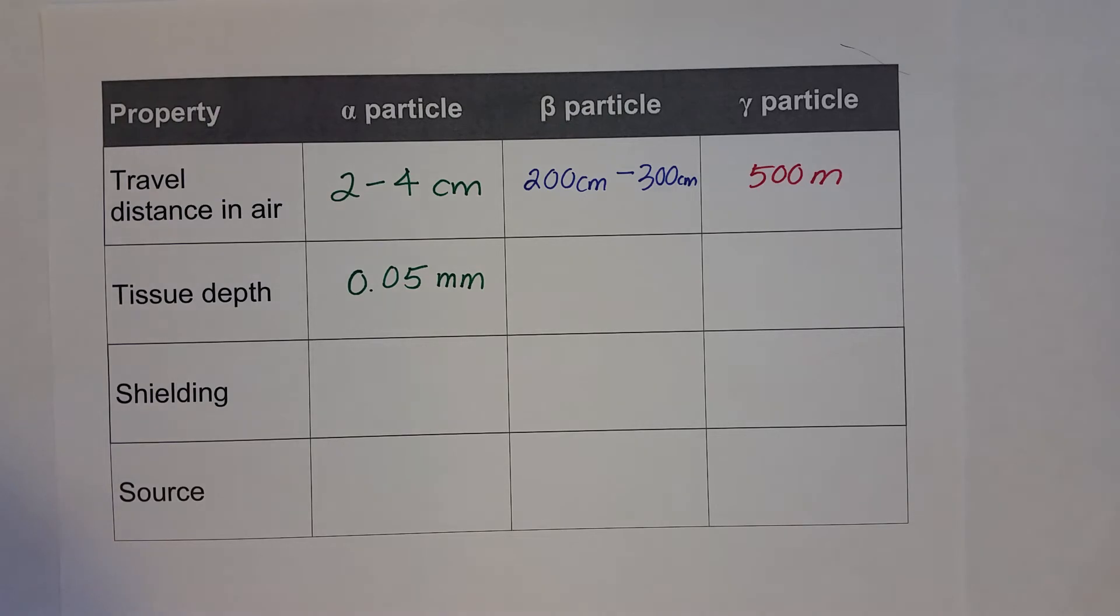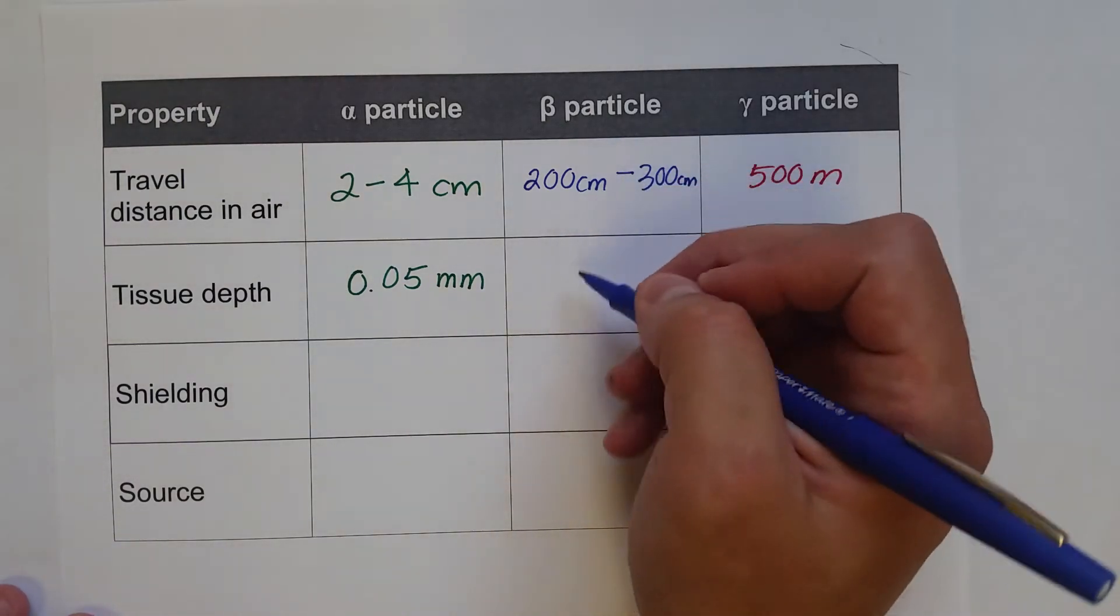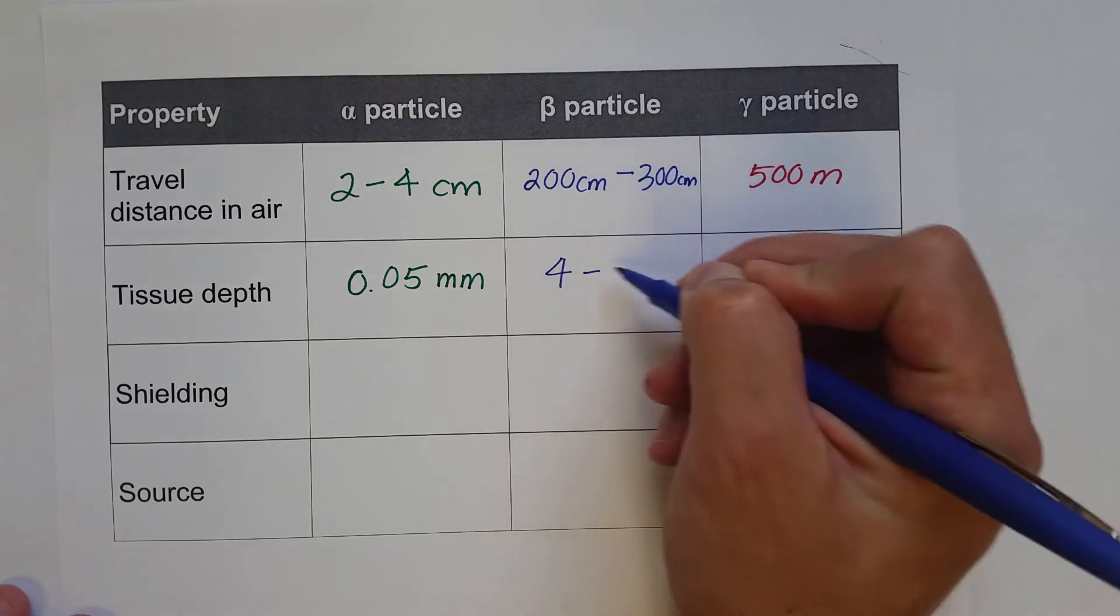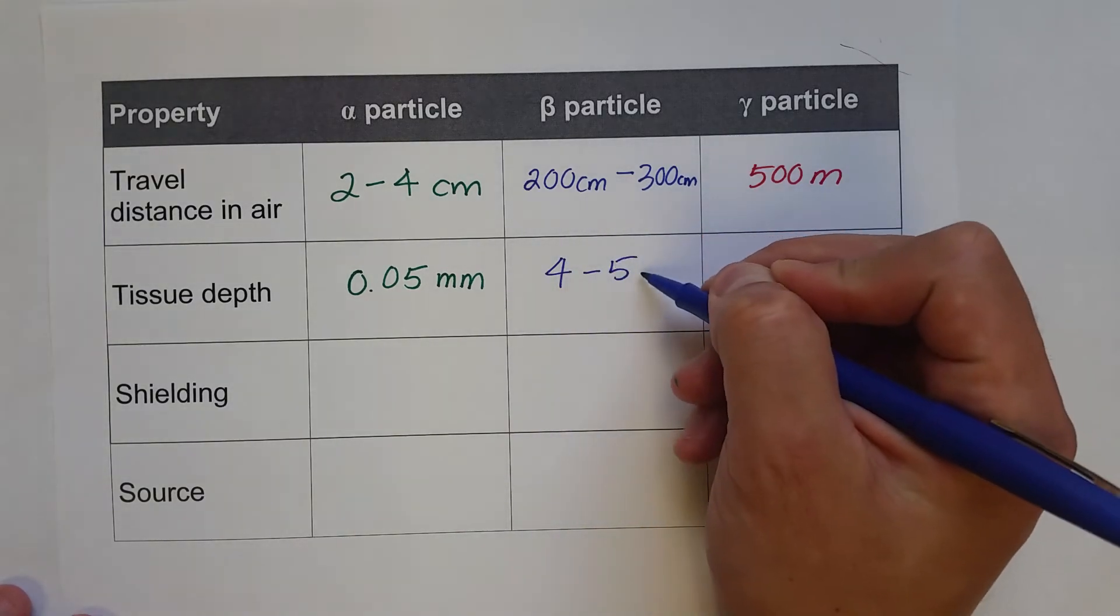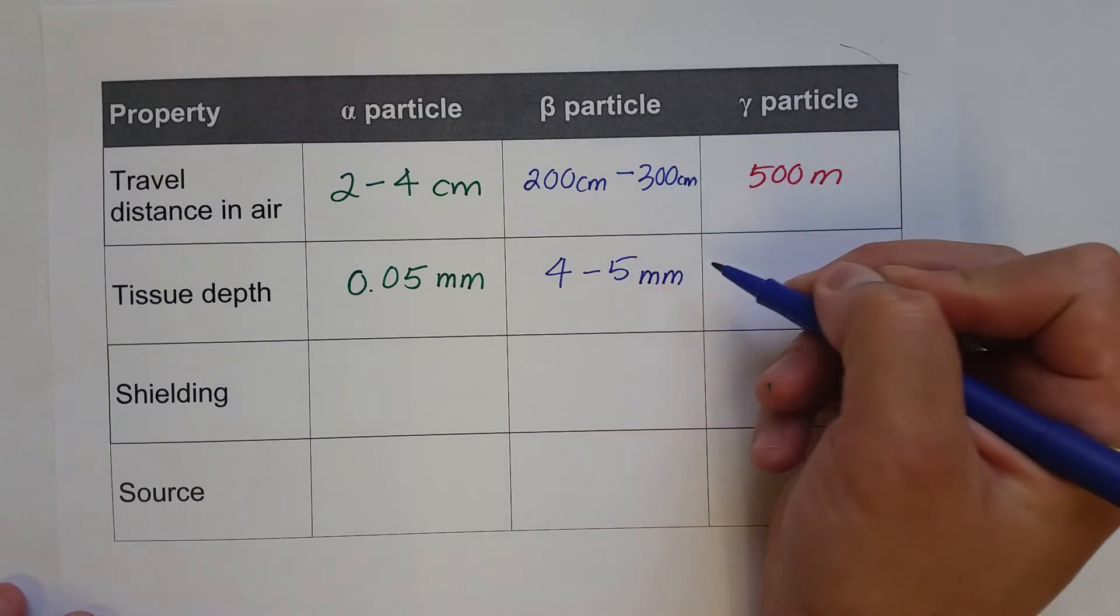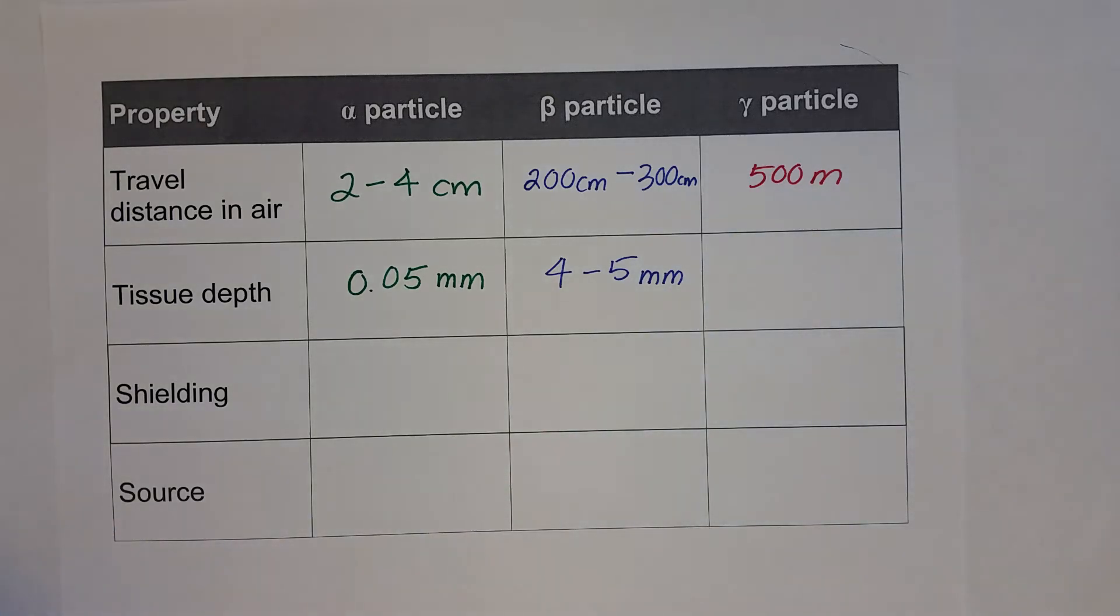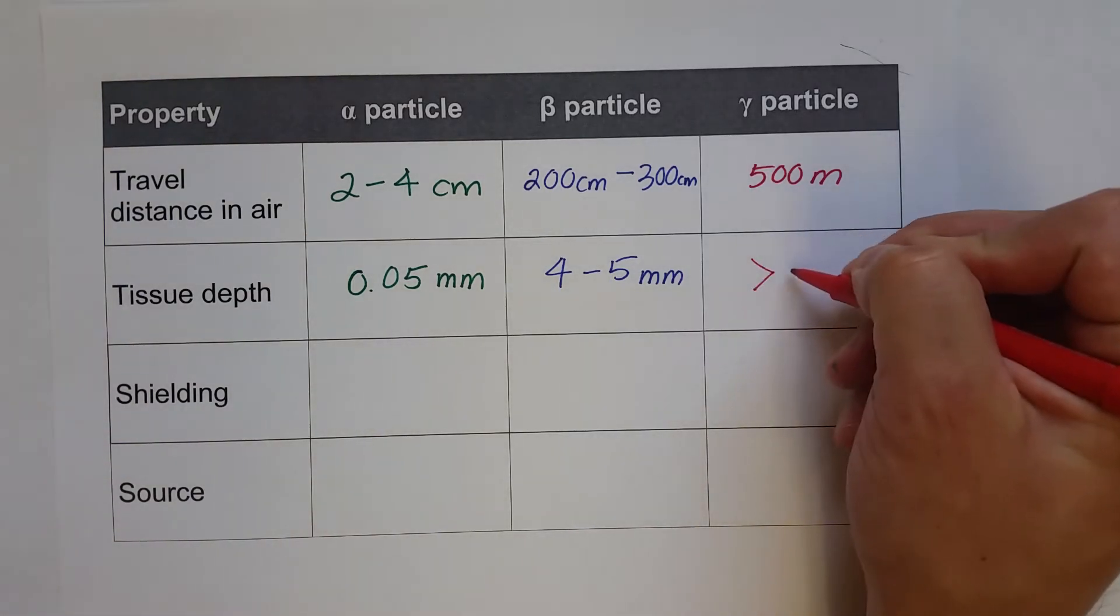Whereas the beta particle can travel 4 to 5 millimeters into the tissue, and of course the gamma ray can travel the furthest, greater than 50 centimeters, or half a meter.